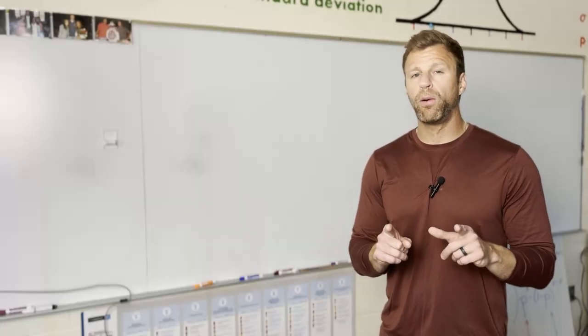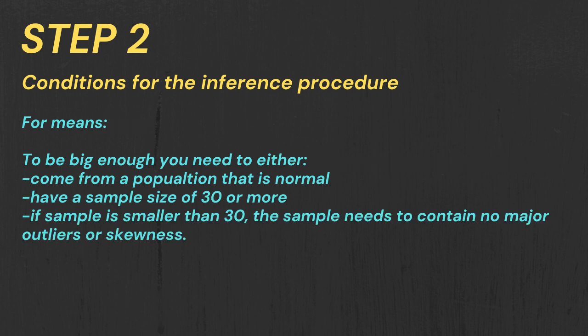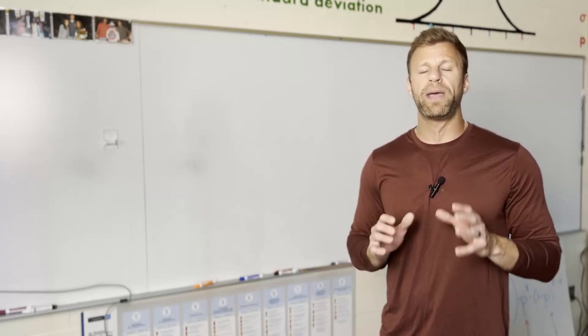If you're working with proportions, big enough means you need 10 or more successes and 10 or more failures in your sample. If you're working with means, big enough can mean a couple things. Actually, any size is big enough if your population is known to be normal. Otherwise, the central limit theorem says to be big enough we need 30 or more in our sample, or we can also be under 30 as long as we check our data and make sure there's no major skewness or outliers. Knowing those conditions and writing them out is going to really pay off on the exam.